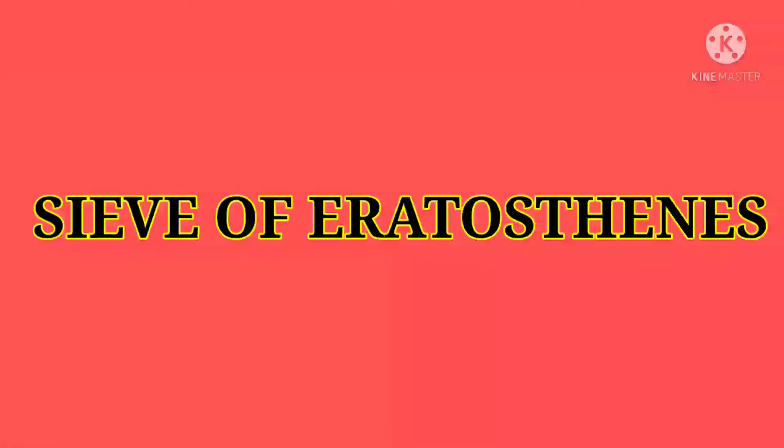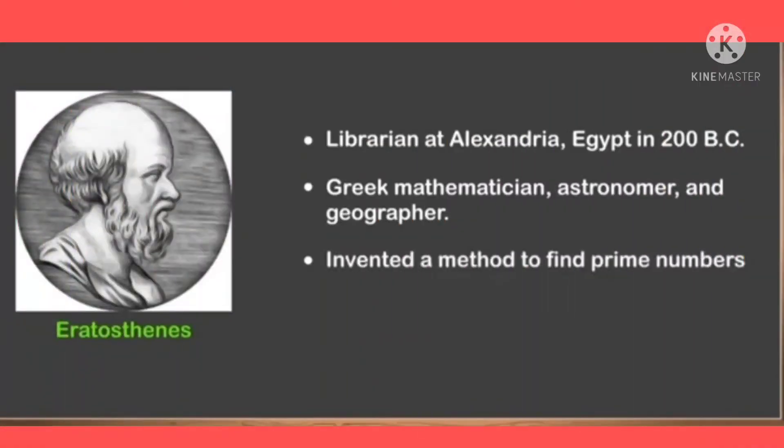Our next topic is Sieve of Eratosthenes. This method of finding prime numbers was invented by a Greek mathematician Eratosthenes. He was a librarian at Alexandria, Egypt in 200 BC. He was a Greek mathematician, astronomer and geographer. He invented this method to find prime numbers.